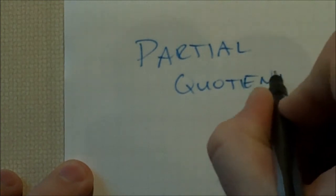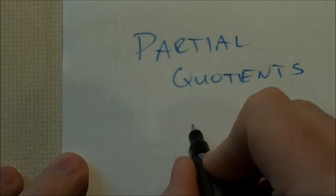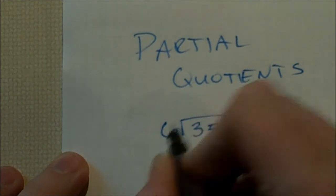To do partial quotients for a problem, let's say we're doing a problem like 352 divided by 6.